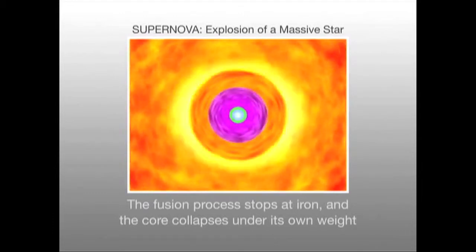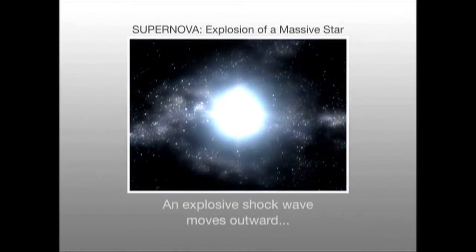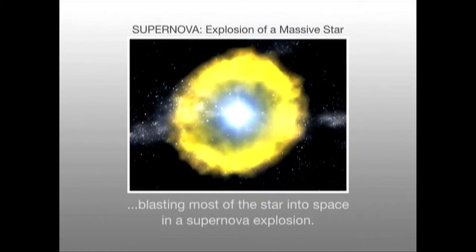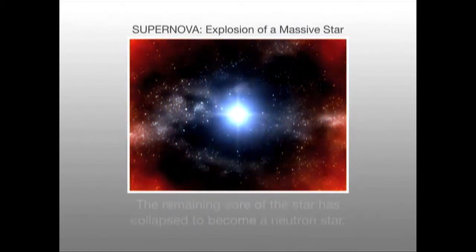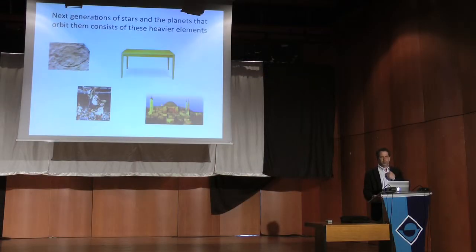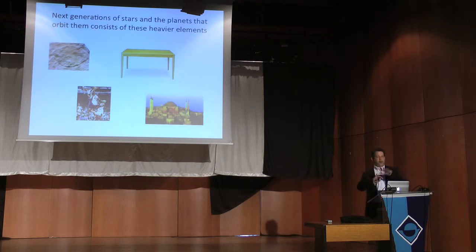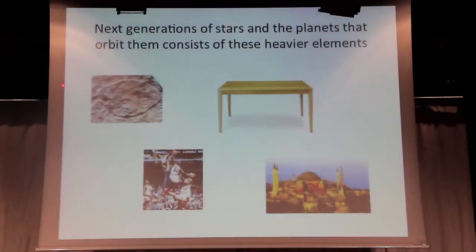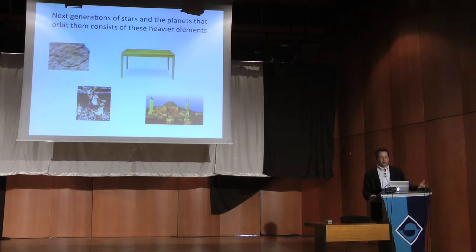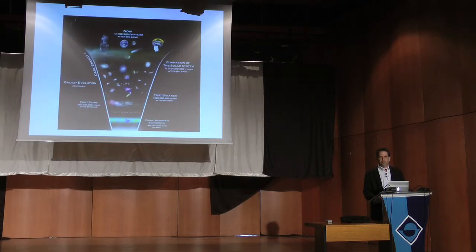After the first generation of stars forms, they send out into space the stuff they produced in their cores. And that garbage is what we are made up of. The next generation of stars and the planets forming around them are therefore made up of these heavier elements. This enables us to make things like single-cellular and multi-cellular animals, tables, people, and exotic buildings. None of these would exist without the refuse from those early exploding stars.